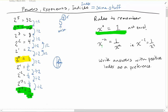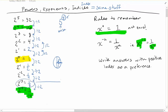Another important rule: x to the power of negative a is equal to 1 over x to the power of a. For instance, x to the power of negative 2 equals 1 over x to the power of positive 2. If it's negative on top, it'll be positive on the bottom. And conversely, 1 over x to the negative a equals x to the positive a on top — if it's negative on the bottom, it becomes positive on top.